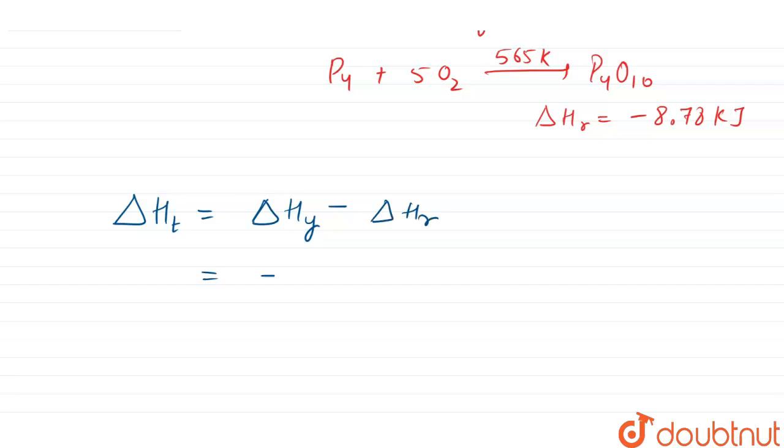So it will be minus 9.91 kilojoules minus minus 8.78 kilojoules. This equals minus 9.91 plus 8.78, which comes out to be minus 1.13 kilojoules. Now let us have a look at the options that have been given to us in the question.